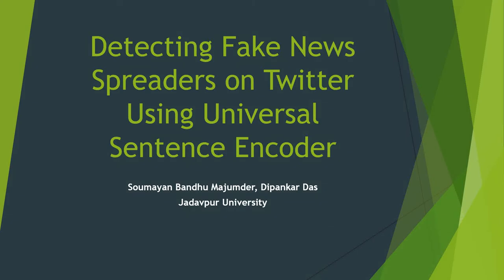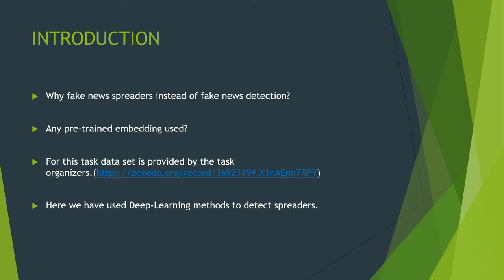Hi all, this is Shomayan. I am going to present detecting fake news spreaders on Twitter using Universal Sentence Encoder. So why fake news spreader instead of fake news detection? If we are going to detect fake news individually, then we have to detect them individually and it is very time-consuming and difficult. Instead, if we detect fake news spreaders, it is more easy and we detect from the root.